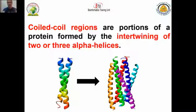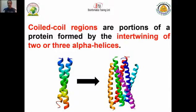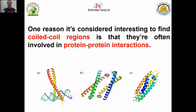First we have to know what a coiled-coil region is. Coiled-coil regions are a portion of protein formed by the intertwining of two or three alpha helices. We all know the difference between alpha helix and beta sheet — these are features of the secondary structure of protein. When two or three alpha helices intertwine with each other, they form a portion of a protein called the coiled-coil region.